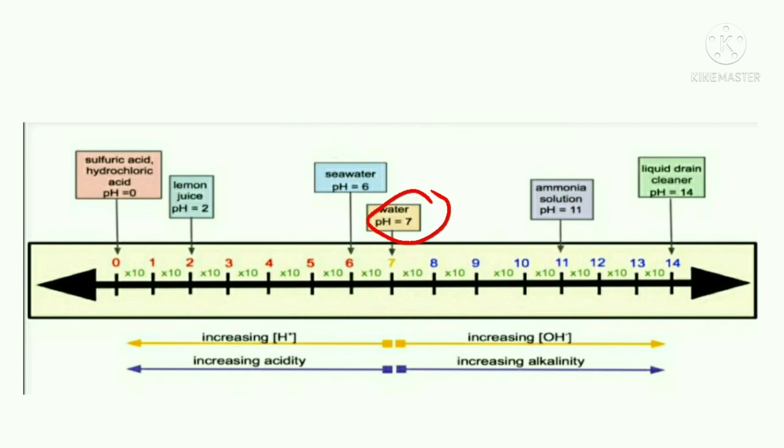From 7 to 14 it is alkalinity. If any solution has pH 7.5, it is low alkaline. If any solution has pH 8, it is 10 times as that of 7. For every one digit, alkalinity increases from 7 to 14 in this direction.